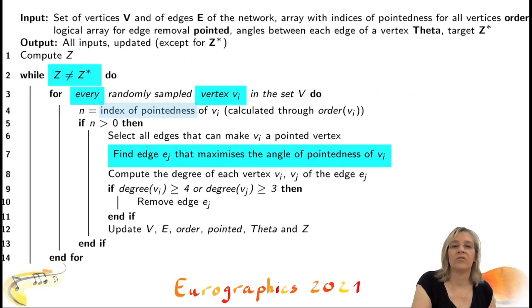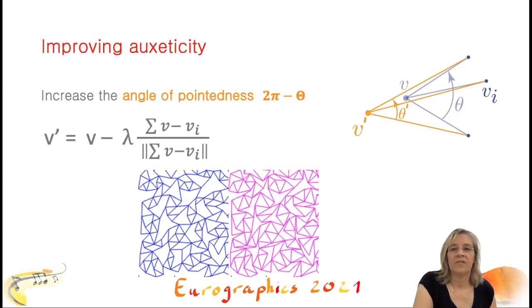The pseudocode of the pruning algorithm shown here is described in detail in the paper. We are using the coordination number Z as a stopping criterion. Indeed, when removing edges, Z decreases monotonically and furthermore, Z helps us to control the stability of the network. We select the edges to delete around a vertex in such a way that the number of pointed vertices and the angle of pointedness will be maximized. We randomly pick vertices at each iteration in order to preserve a well distributed density. We take care of avoiding isolated edges and vertices during pruning.